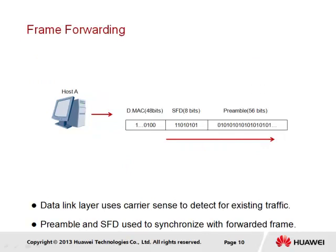Prior to the forwarding of the frame, it is necessary for the sender, host A, to verify that the transmission medium is clear of any data, specifically if the medium represents a shared medium, in order to avoid any collisions. The actual forwarding of a frame onto the physical medium is preceded by what is known as the preamble and start frame delimiter, which together represent a 64-bit string of interleaving 1 and 0 bit values, giving the receiving interface enough time to react to the sudden arrival of a frame. The final two bits of the start of frame delimiter are set to 1, indicating that the bits that follow represent the start of the actual frame.